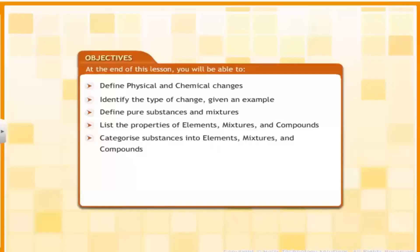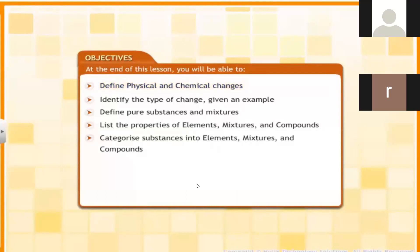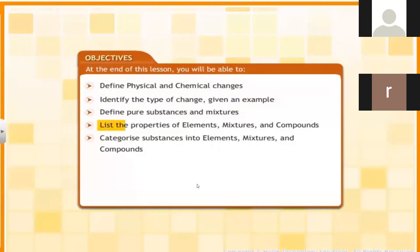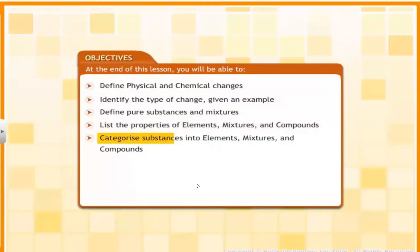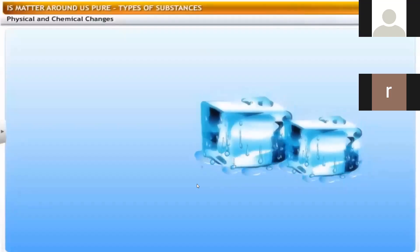In this lesson you will learn about elements, mixtures and compounds. At the end of this lesson you will be able to define physical and chemical changes, identify the types of change given an example, define pure substances and mixtures, and list the properties of elements, mixtures and compounds.